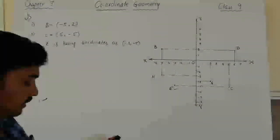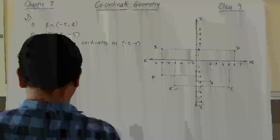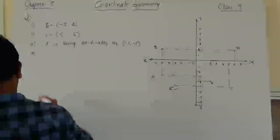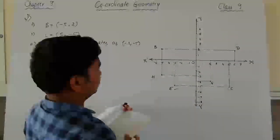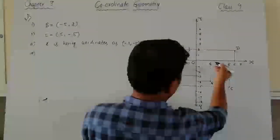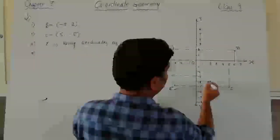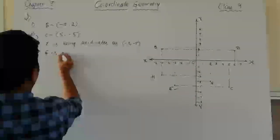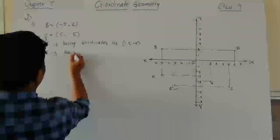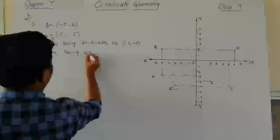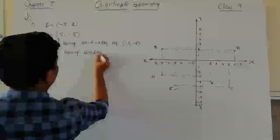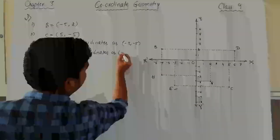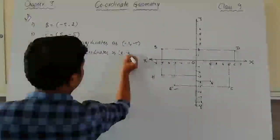The fourth part asks to identify the point with coordinates 2 comma minus 4. On the x-axis locate 2 and on the y-axis locate minus 4 — the point there is G. So G has coordinates 2 comma minus 4.